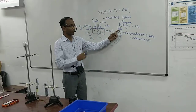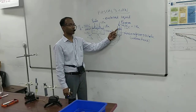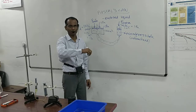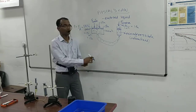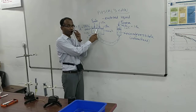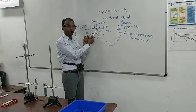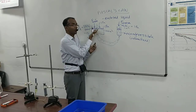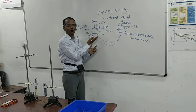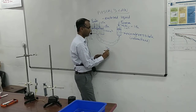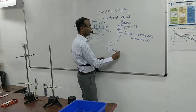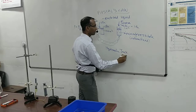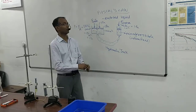Imagine somebody exerts a force equivalent to the weight of just 1 kg object on the small piston — how much weight can it support on the other side? 100 kg. So by applying a force equivalent to 1 kg weight, I can balance 100 kg. This principle is called the hydraulic jack — it is used to lift a car. One person can exert a force equivalent to lift a car. The same concept applies to hydraulic bridges and hydraulic brakes.